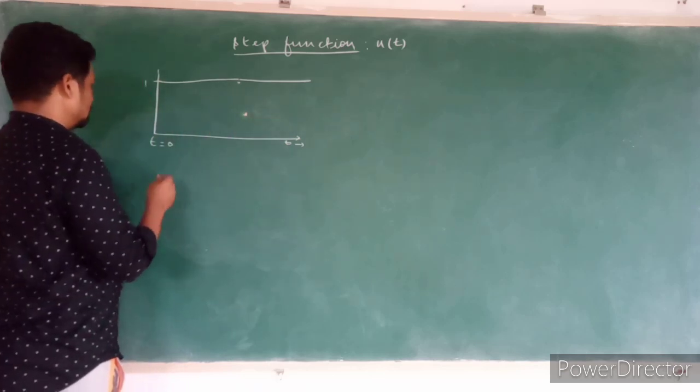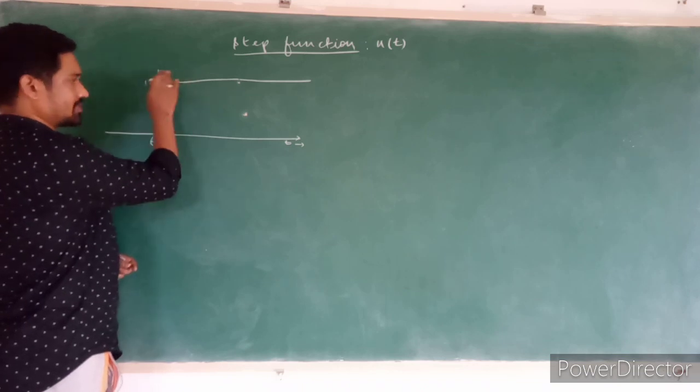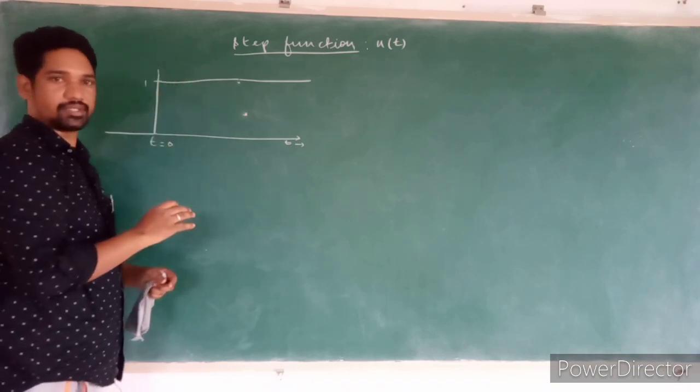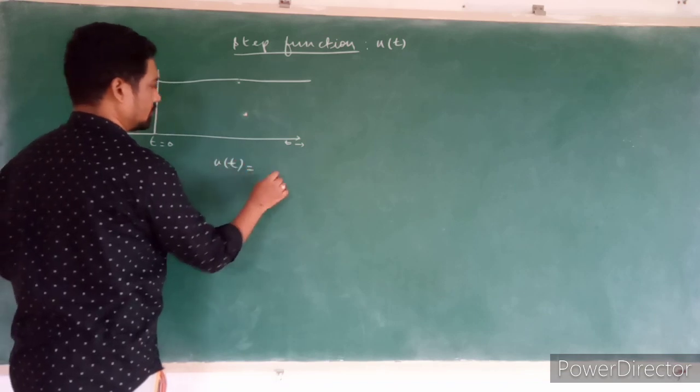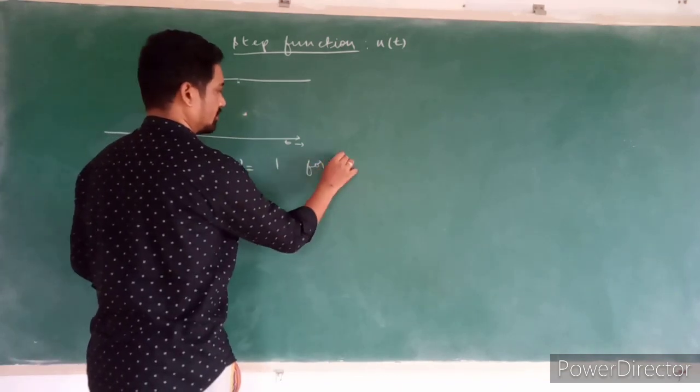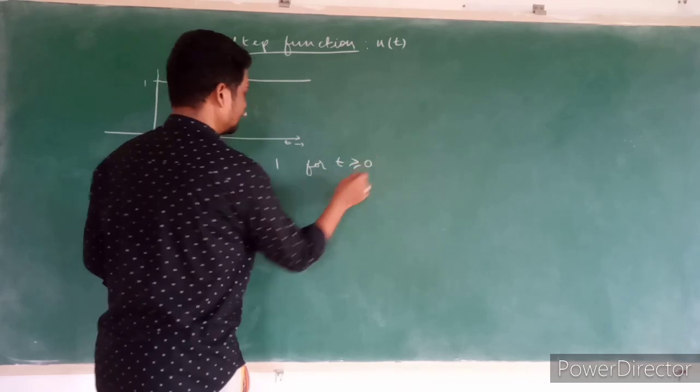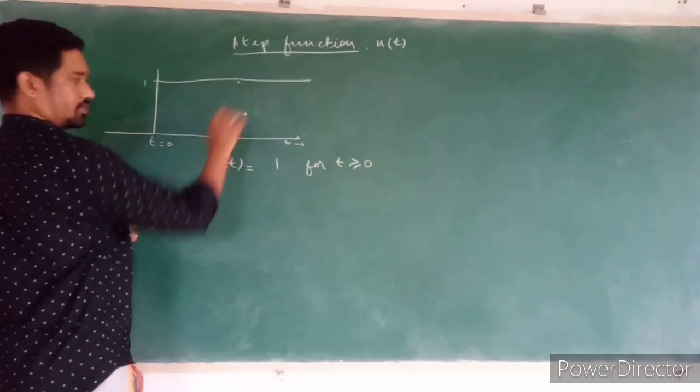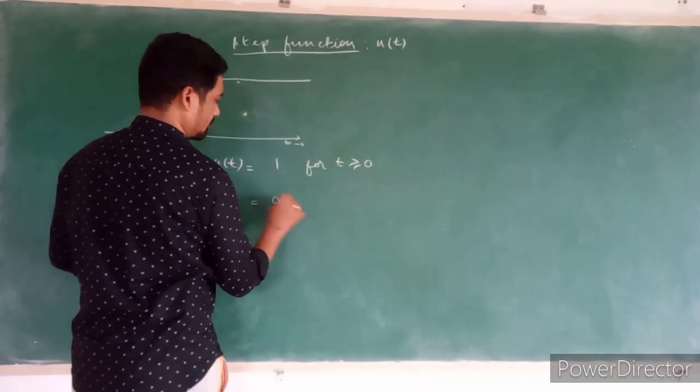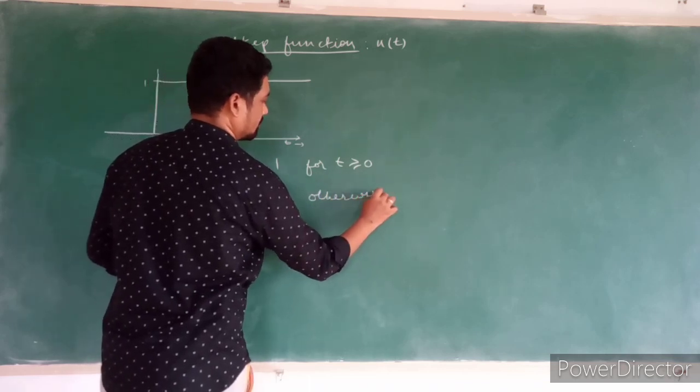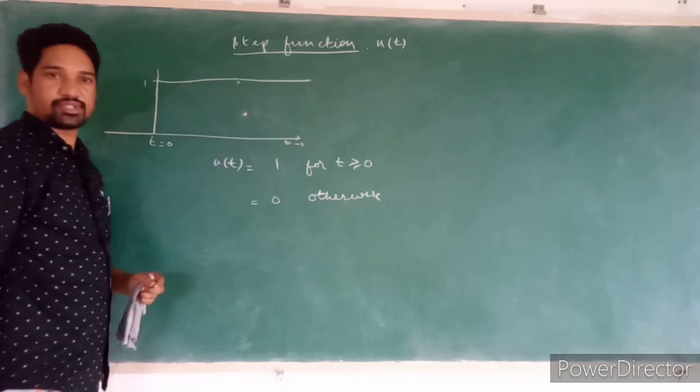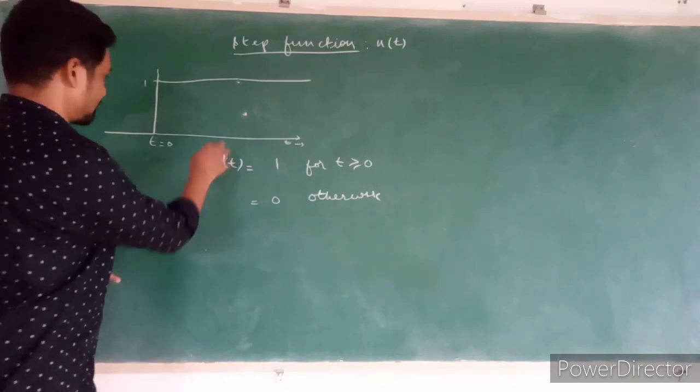So how to represent this waveform mathematically? It is like u(t) equal to 1 for t greater than or equal to 0, and it is equal to 0 otherwise. This is how we represent a step function mathematically.